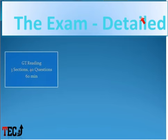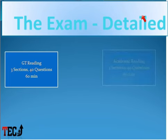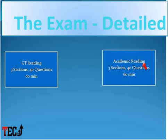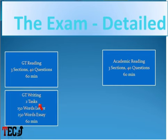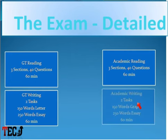In the details of each module: GT reading has three sections with 40 questions and 60 minutes. Academic reading also has three sections with 40 questions and 60 minutes. The GT writing part has two tasks — Task 1 is a 150-word letter and Task 2 is an essay of 250 words, with a duration of 60 minutes. In academic writing, there are also two tasks — Task 1 is graph writing and Task 2 is an essay of at least 250 words, again in 60 minutes.